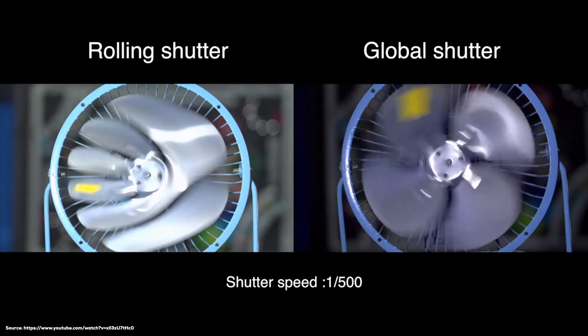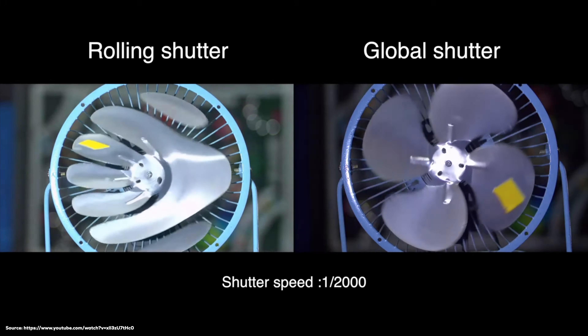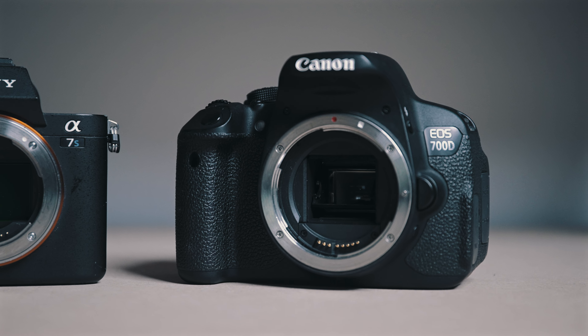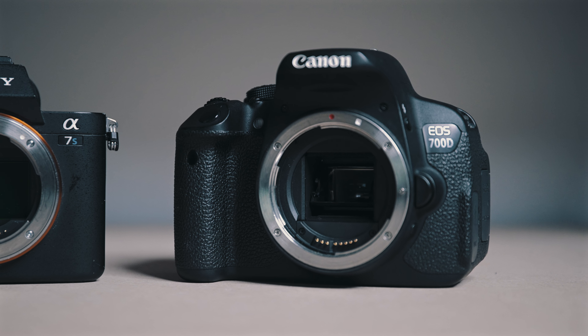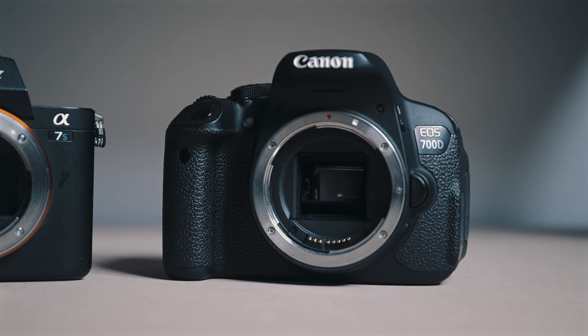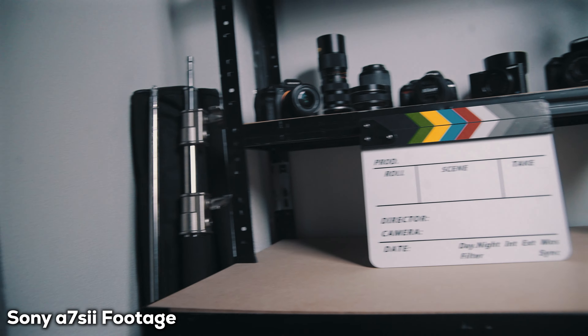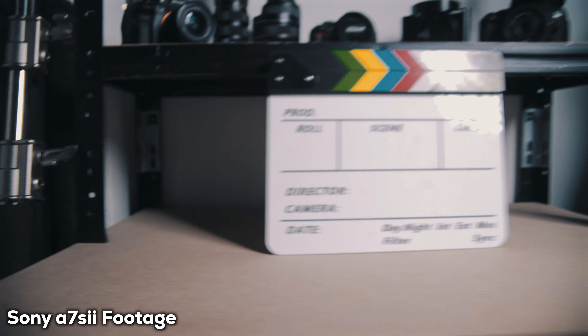However, electronic shutters may encounter limitations with rolling shutter effects, especially when capturing fast-moving subjects or shooting under artificial lighting. The rolling shutter is a type of shutter commonly found in consumer cameras, including most DSLRs and smartphones. It works by capturing the image or video frame line by line from top to bottom, like a scanning motion. When using a rolling shutter, the image sensor captures different parts of the scene at slightly different times, which can cause a distortion known as the rolling shutter effect. This is most noticeable with straight lines, fast-moving objects, or when panning the camera quickly.